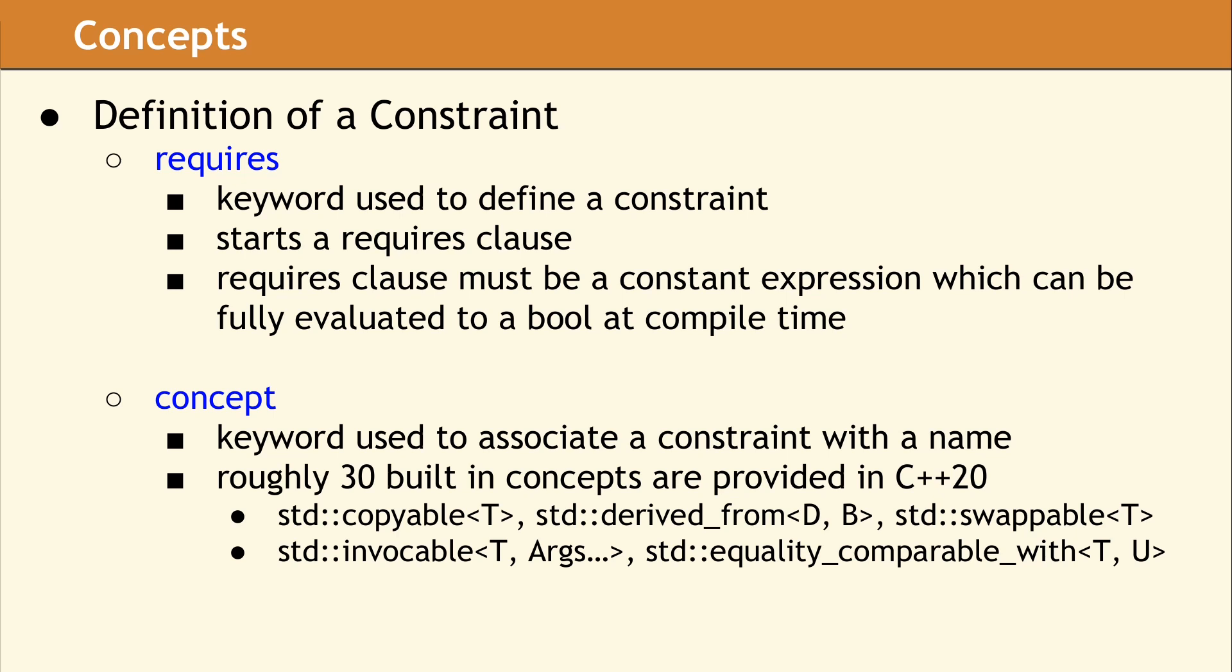When we take a constraint and associate it with a name, this creates a new concept. Declaring a concept is similar to declaring a variable. Once a concept is created, you refer to it by using its name. Naming something is valuable when it will be used more than once.